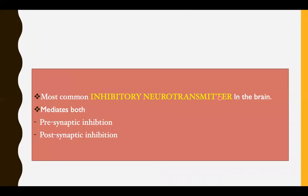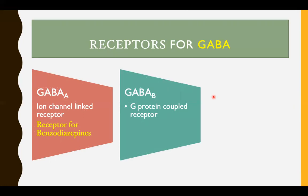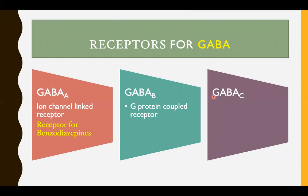GABA is the most common inhibitory neurotransmitter in the brain; it mediates both presynaptic and postsynaptic inhibition. The receptors for GABA are: GABA-A, which are ionotropic (ion channel-linked) receptors and the targets for benzodiazepine tranquilizers used in anxiety and insomnia; GABA-B receptors, which are G protein-coupled receptors; and GABA-C receptors, which are also ionotropic receptors.